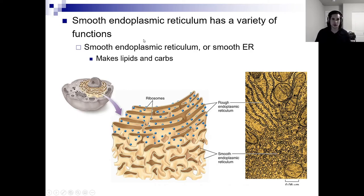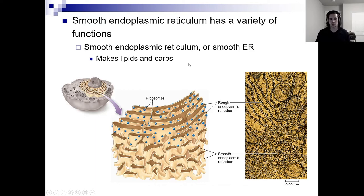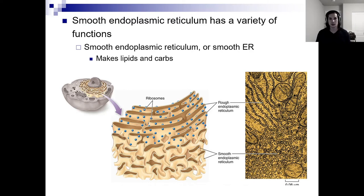The smooth endoplasmic reticulum. What made the rough ER rough was the ribosomes — the smooth ER does not have ribosomes, therefore making it smooth. Its main function is making lipids and carbohydrates, and also detox. You'll find a lot of smooth ER in your hepatocytes — the cells of your liver — because your liver is heavily involved in the detoxification process.